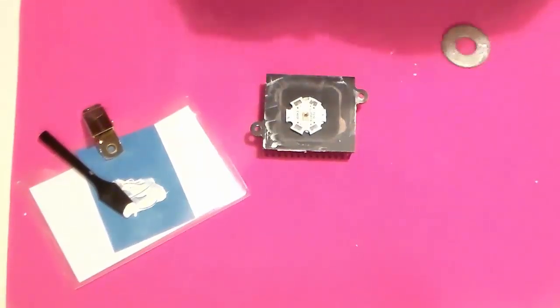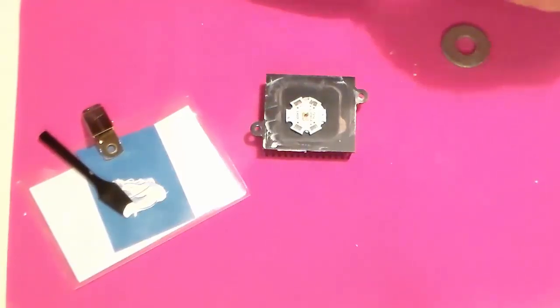That kind of squishes it out a little bit. You can see the compound is starting to come around here. I'm going to take electrical tape and wrap that around my washer so it's a little smoother and cleaner. Then we're going to put a clamp on this thing and let it sit overnight. That thermal compound sets up in about five minutes, but the manufacturer tells us we should let it sit for at least 24 hours before we apply any significant heat to it.